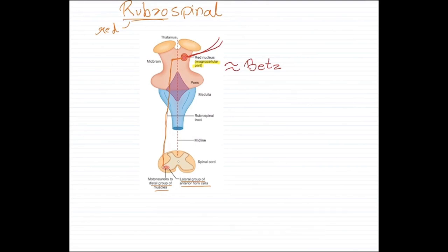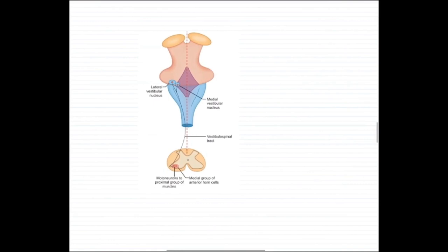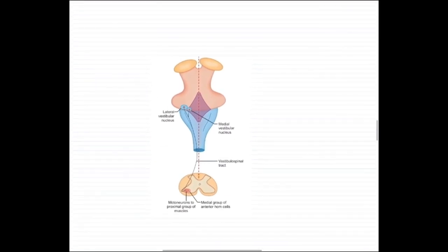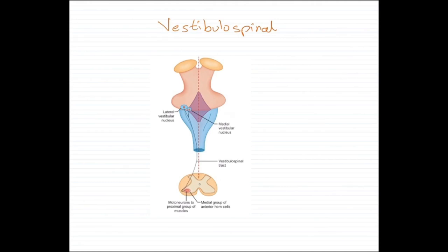The rubrospinal tract is pretty similar to the corticospinal tract. Moving on to the next extrapyramidal tract: the vestibulospinal tract. The name tells us the origin — the vestibular nuclei. There are two vestibular nuclei: the lateral and the medial. The lateral vestibular nucleus is also called Deiters' nucleus.